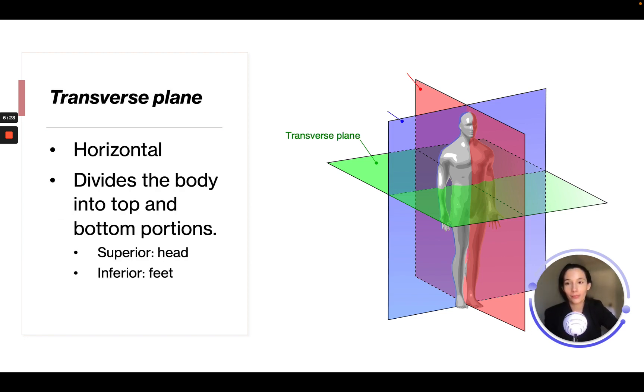And the transverse plane—this is the green box—that is cutting the body horizontally and it divides the body into top and bottom portions. Some other words you'll need to know for understanding the top and bottom portions are superior is the head and inferior is the feet. So you may see a question using that terminology.